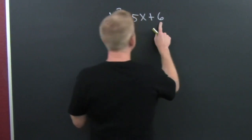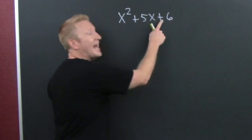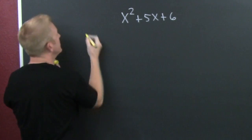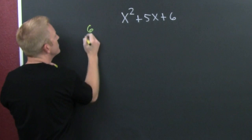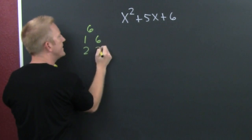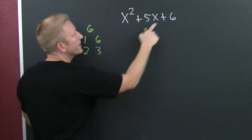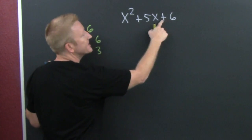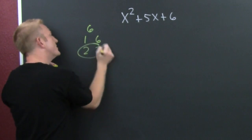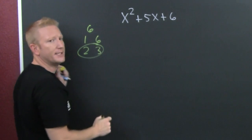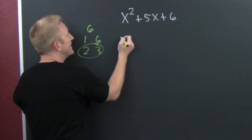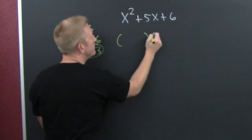You're looking for the factors of 6 that add to be 5. So break it down — 6 is 1 and 6, and 2 and 3. We're looking for the factors of 6 that add to be 5. Are there any? 2 and 3 certainly add to be 5. So then you gotta get that.